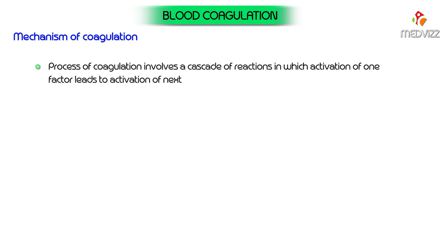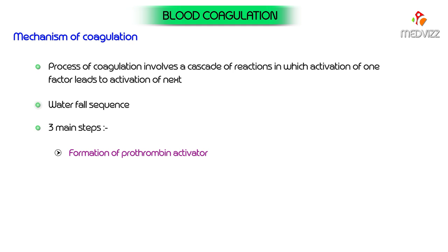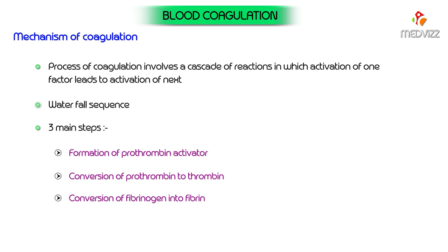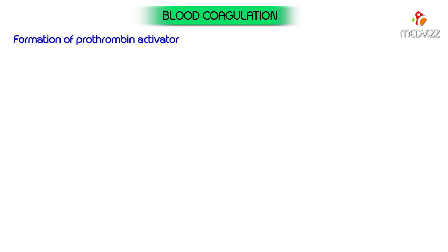The process of coagulation involves a cascade of reactions in which activation of one factor leads to activation of the next clotting factor. This enzyme cascade reaction is also called the waterfall sequence. The process of coagulation can be divided into three main steps: formation of prothrombin activator, conversion of prothrombin to thrombin, and conversion of fibrinogen to fibrin.